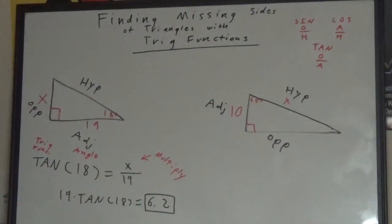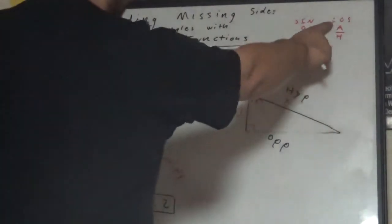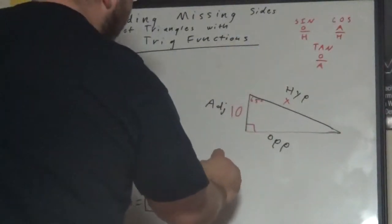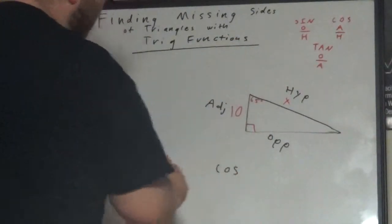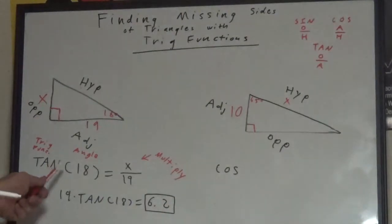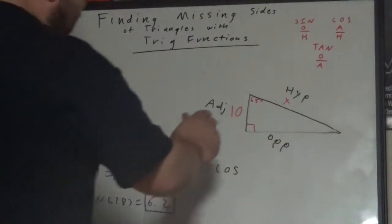Which one uses adjacent and hypotenuse is, of course, cosine. Now I am going to put cosine and then I am going to put the angle measurement, 65.